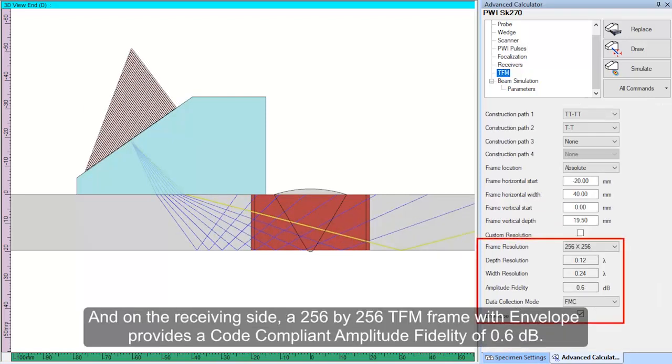And on the receiving side, a 256 by 256 TFM frame with envelope provides a code-compliant amplitude fidelity of 0.6 dB.